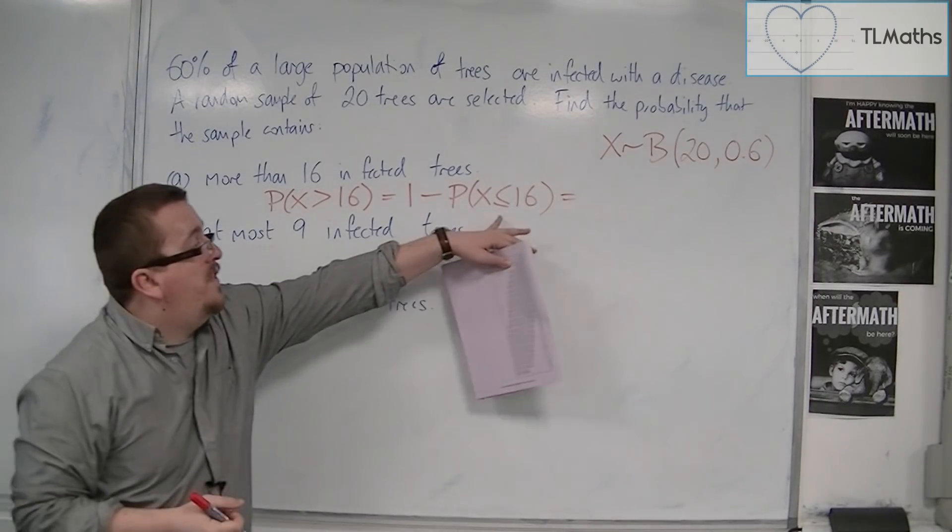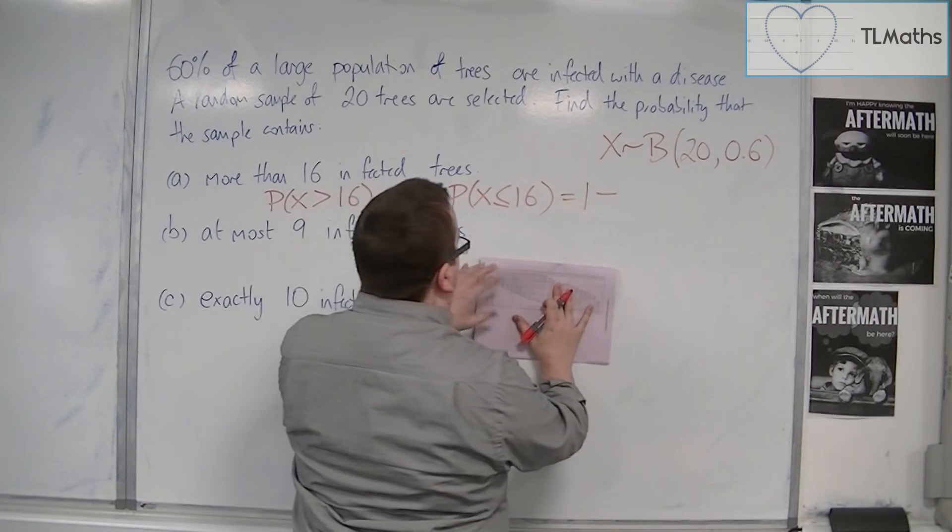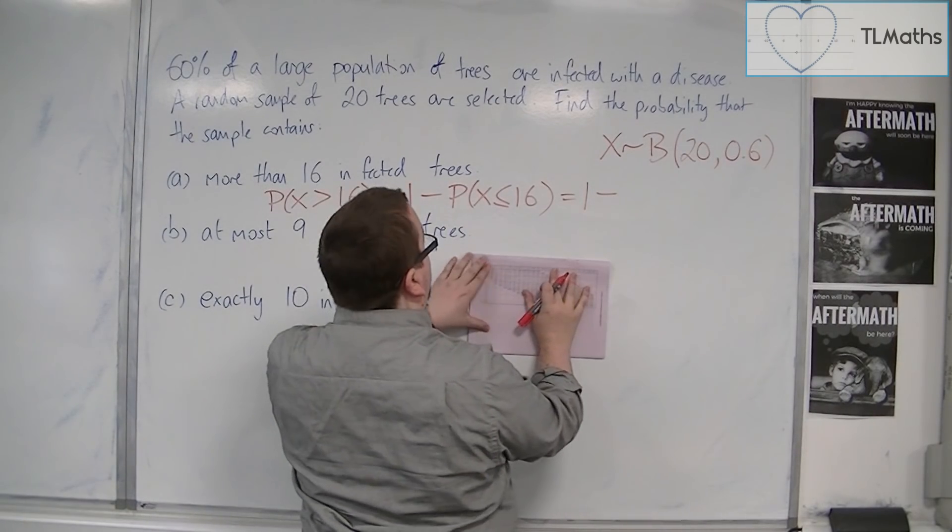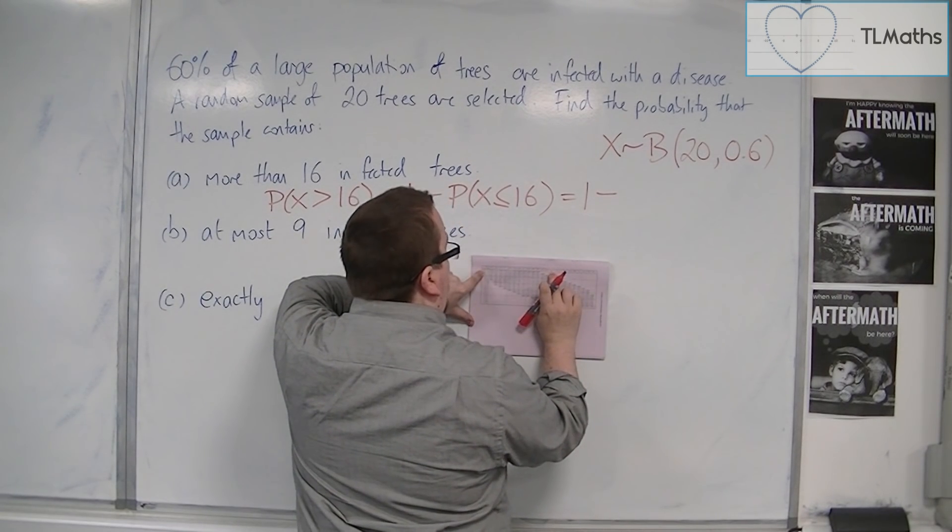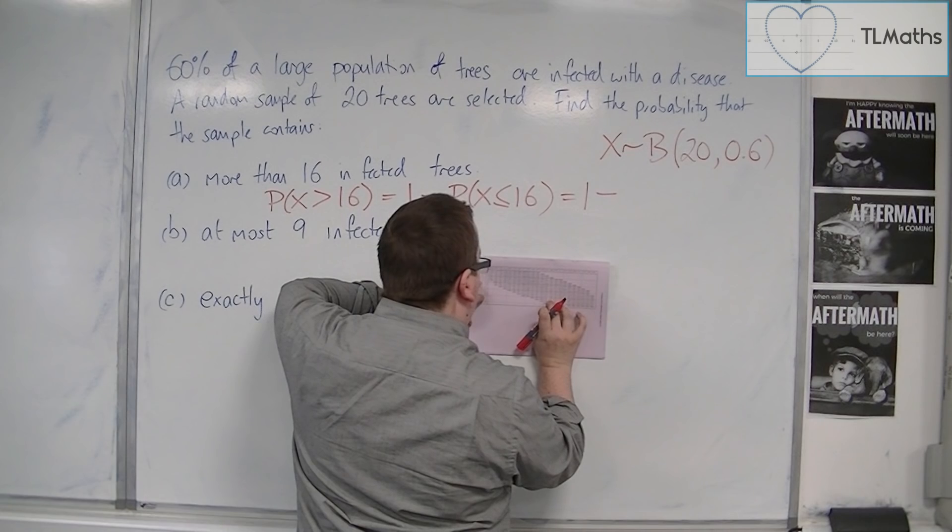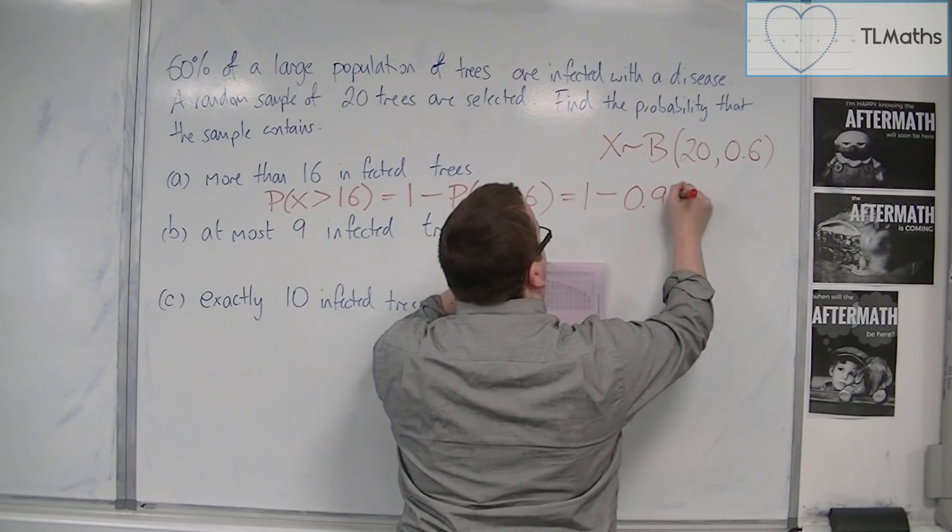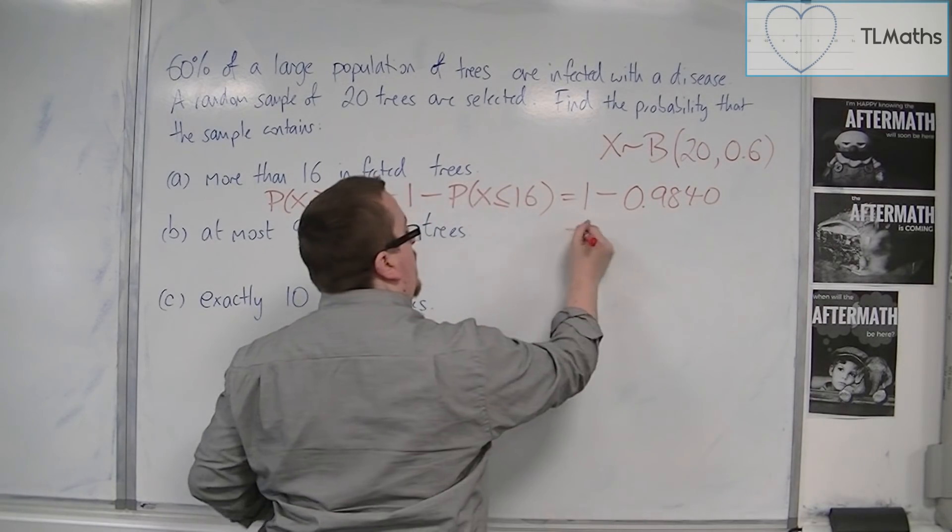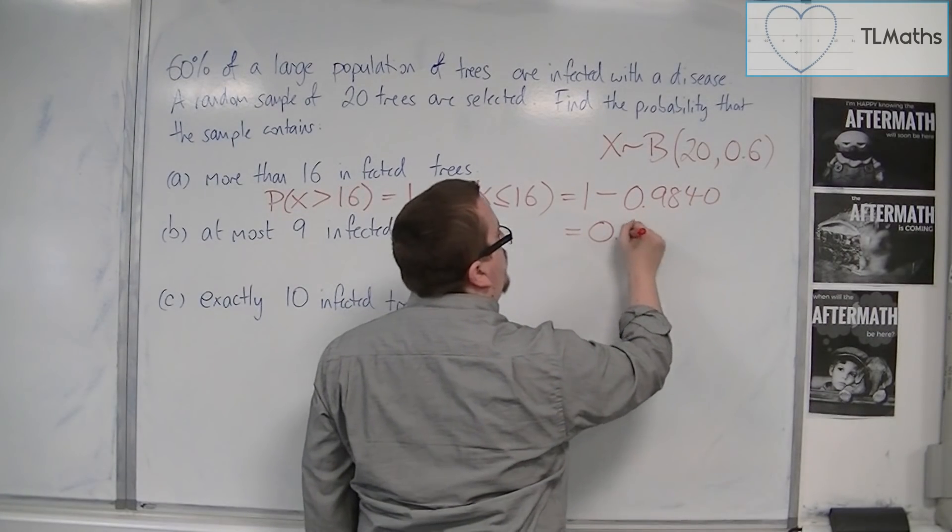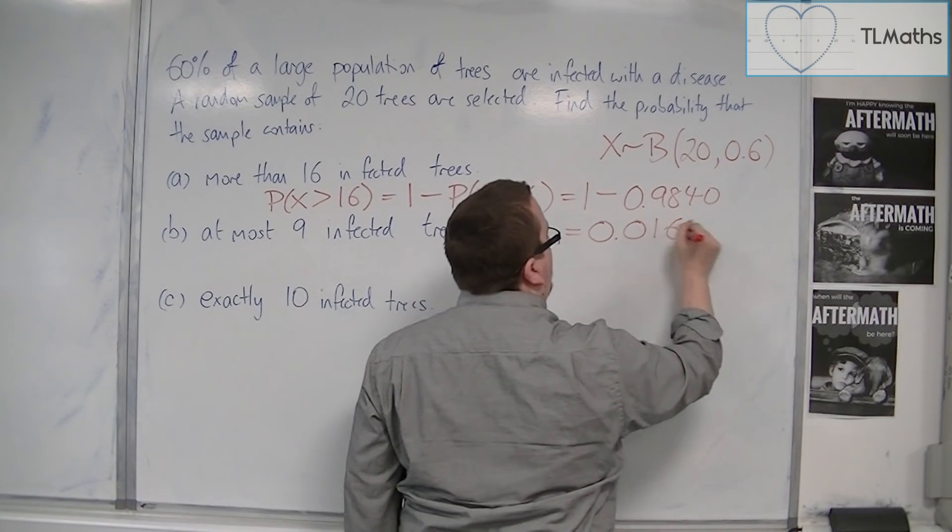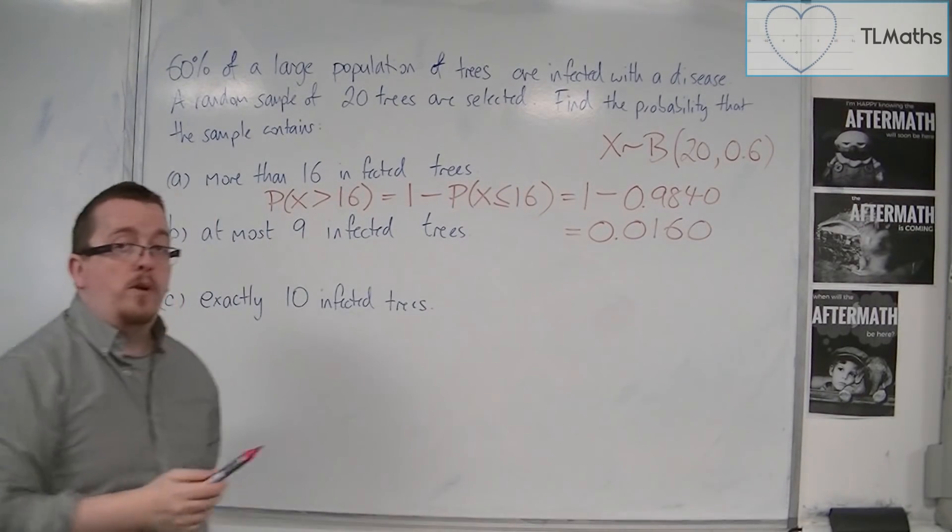So I just need to find that one in the tables. So that's one take away. We look up our tables in the formula booklet. So 0.6 is the probability, with N is 20. And we go down to 16, and that's 0.9840. And so the final probability that we're looking for is 0.0160. And that's what we wanted for that problem.